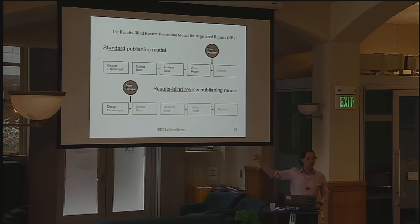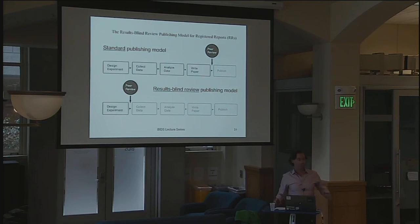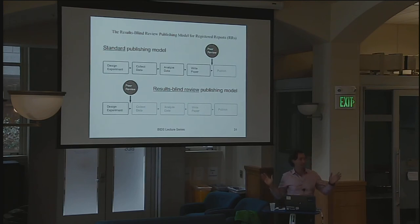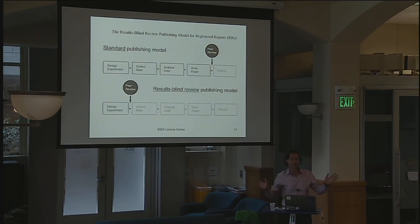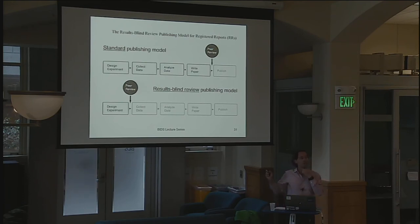Even if you get a null result or a surprising result, you're going to get published under the registered reports model. Card and Krueger collected data in the 1990s showing minimum wage increases really didn't affect employment, and there was a lot of resistance in the economics profession to that finding. People were upset. They said they lost friends — there were people in the profession that wouldn't talk to them for years because they felt like they were traitors to their discipline. If you have registered reports, you're kind of protected from that too. We can all agree on the design — there's just a zero here, so don't blame the messenger. People were afraid those zeros were author effects, that they were biased. There's a lot of potential advantages to this approach.